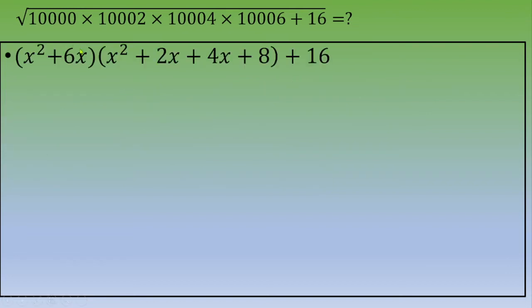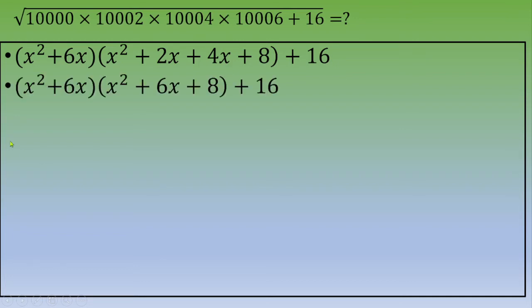Rearranging the second factor, 2x + 4x = 6x, so the full expression becomes (x² + 6x) × (x² + 6x + 8) + 16.